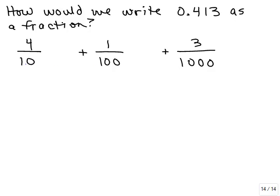And what would it be? What's the smallest number 10, 100, and 1,000 go into? It's 1,000. So I'm going to multiply this first fraction by 100 over 100 to get 1,000 in the denominator. And the second fraction I'm going to multiply by 10 over 10.